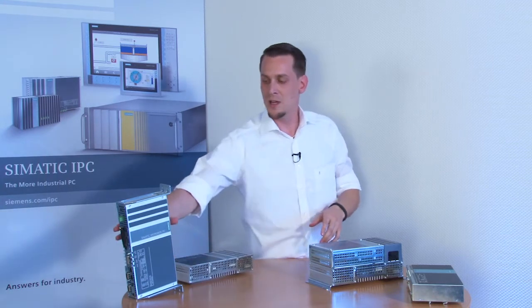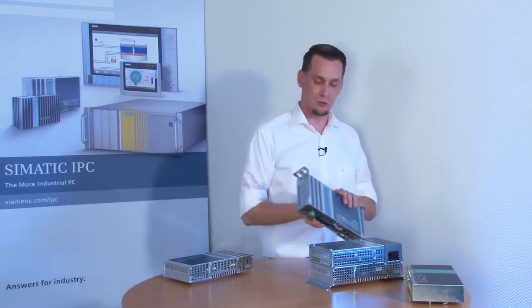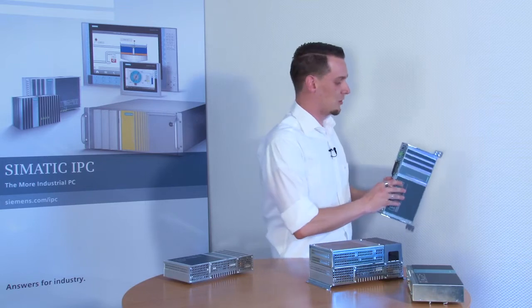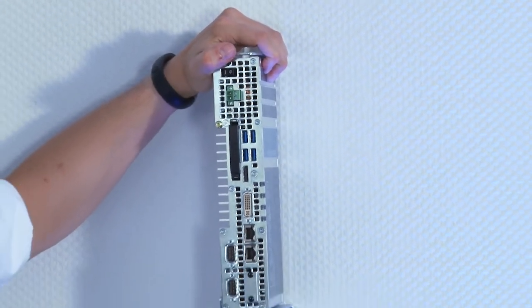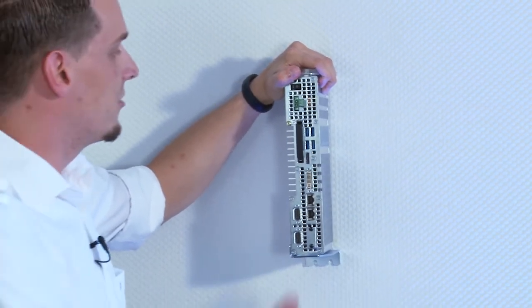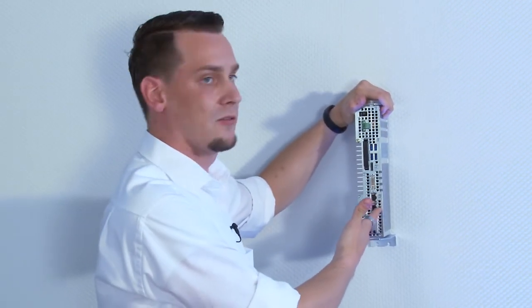The third version has an especially small footprint. This is front book mounting. The device is mounted upright in the switchgear cabinet, for example, and all interfaces and control elements are accessible on the front.